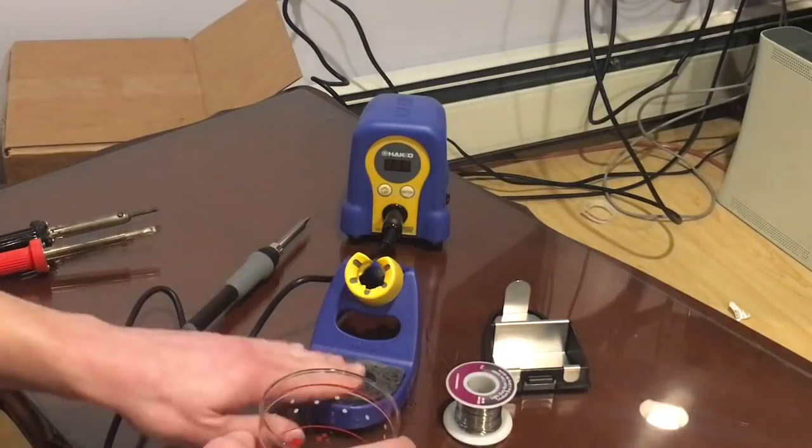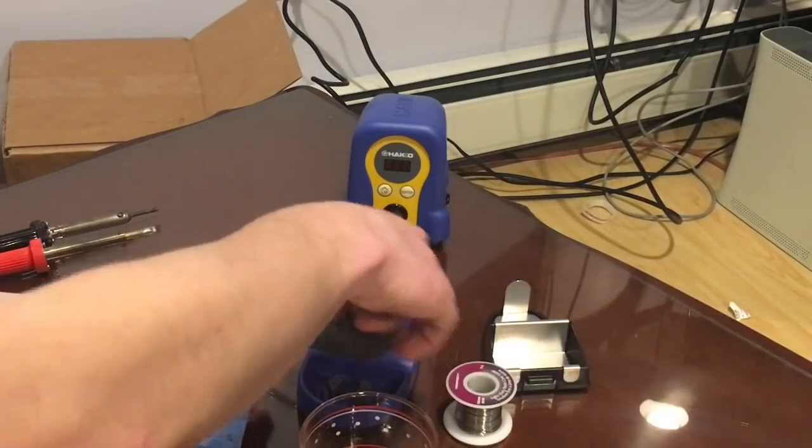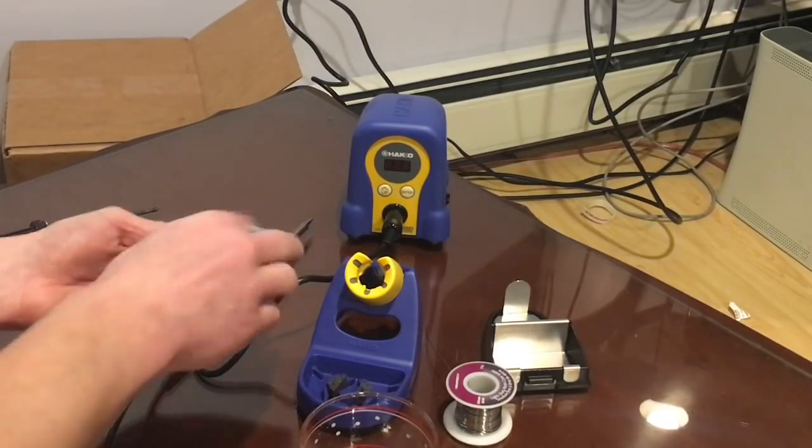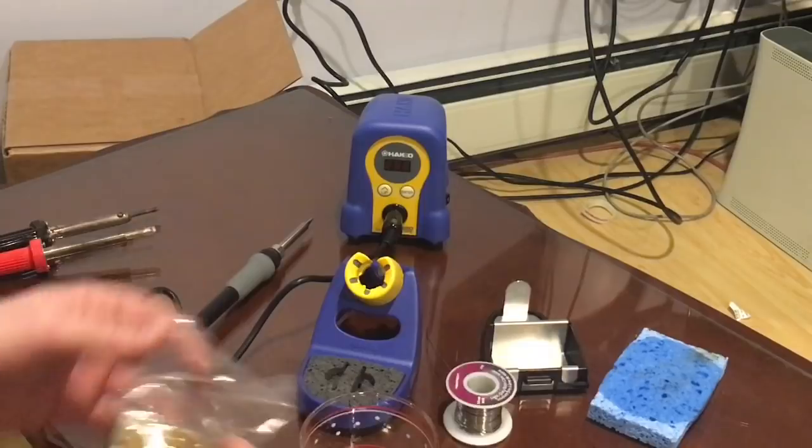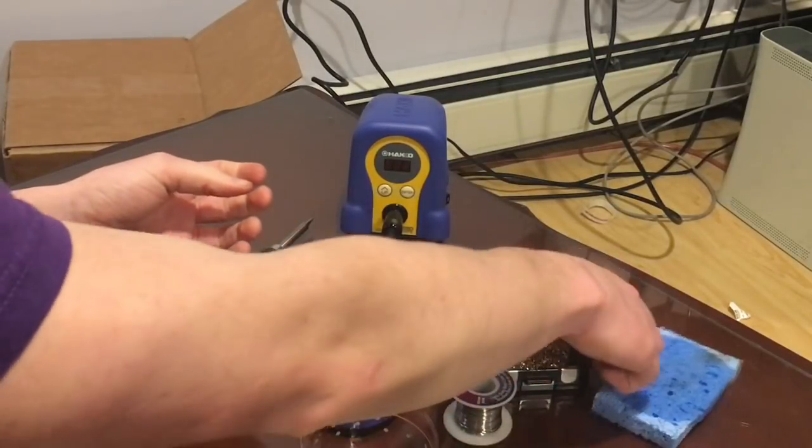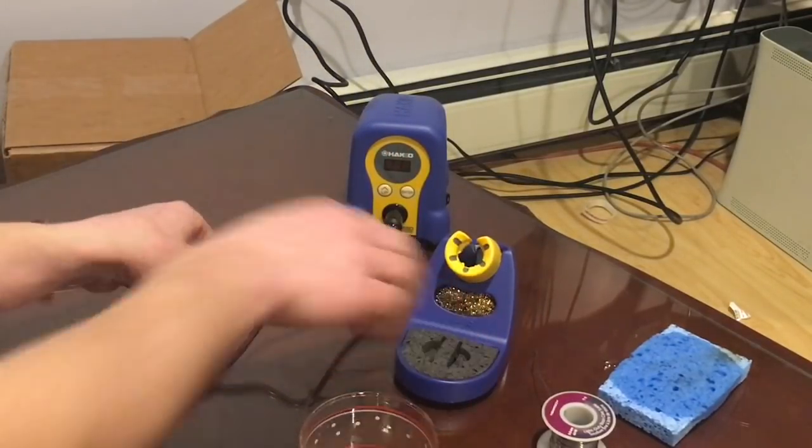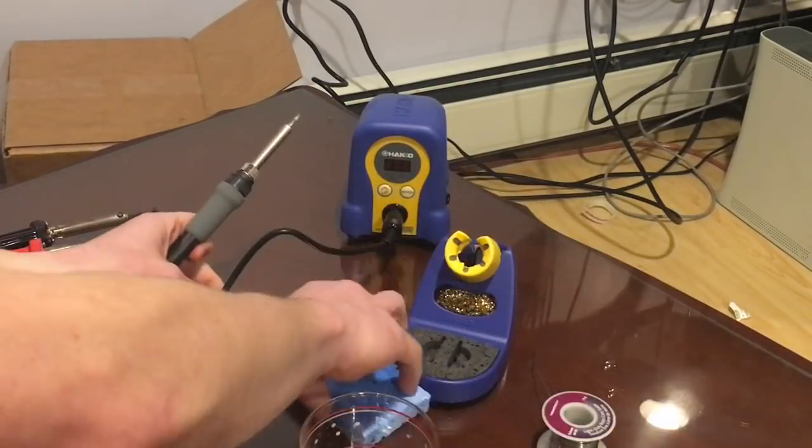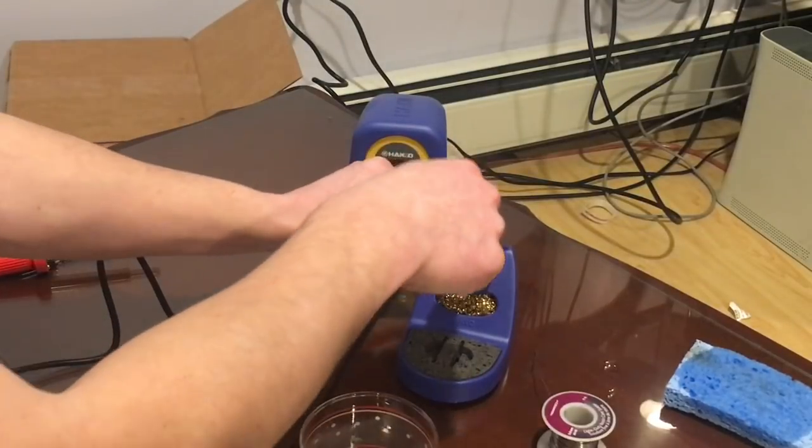Now the cleaning wire sits in this insert that goes inside of the stand. And then when you close it, it pops out right there. So when you're cleaning your soldering iron you can either clean it with this or clean it with the sponge.